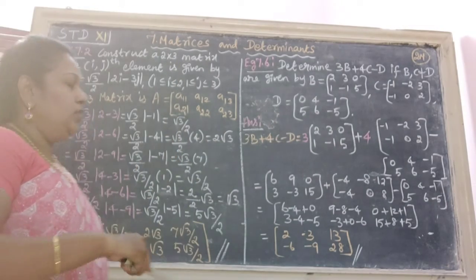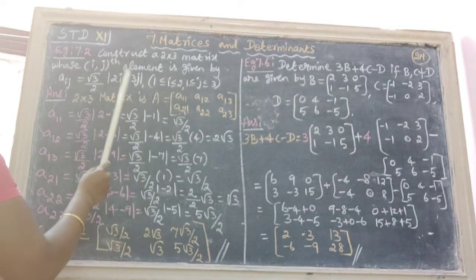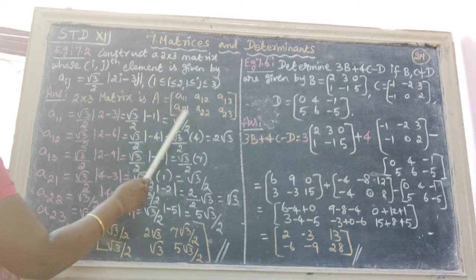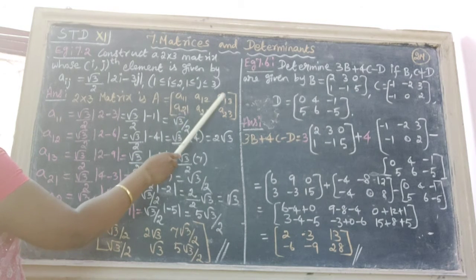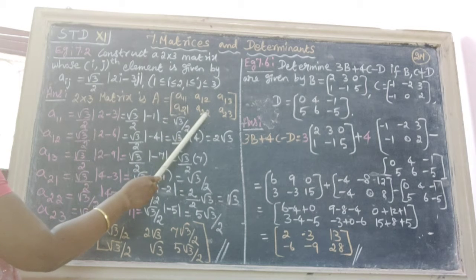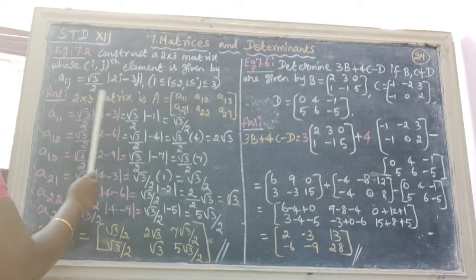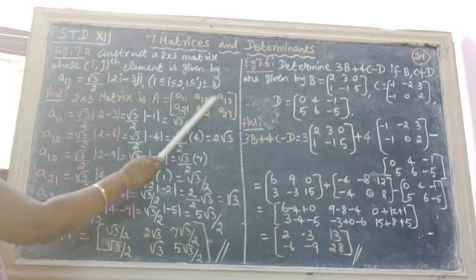Already we know that the sum 2 cross 3 matrix A is this form: A11, A12, A13, A21, A22, A23. That is 2 rows and 3 columns.